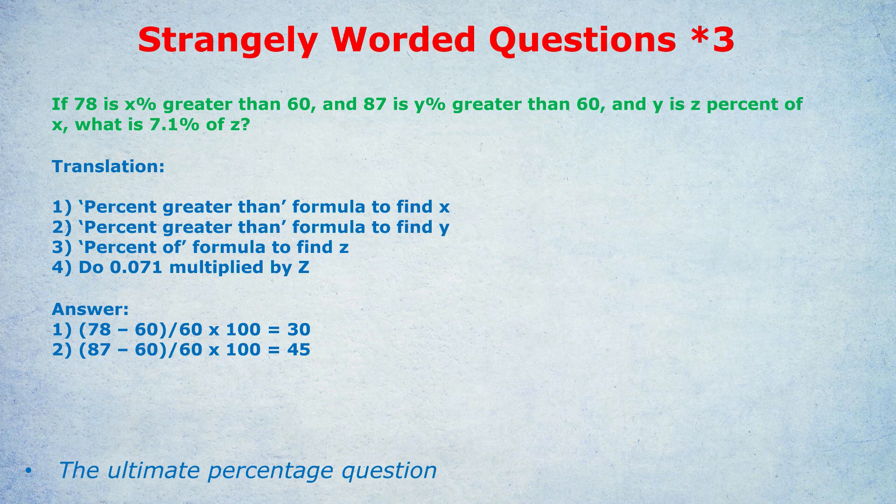So you do the first number divided by the second number times 100. y is what percent of x? y divided by x times 100. In this case we know that y is 45 and x is 30, so it's 45 divided by 30 times 100 and that gives us 150. So we know z is 150. Notice I've avoided any complex algebra by staying calm and translating the question into easier words. No need to use algebra if you can just work it out.